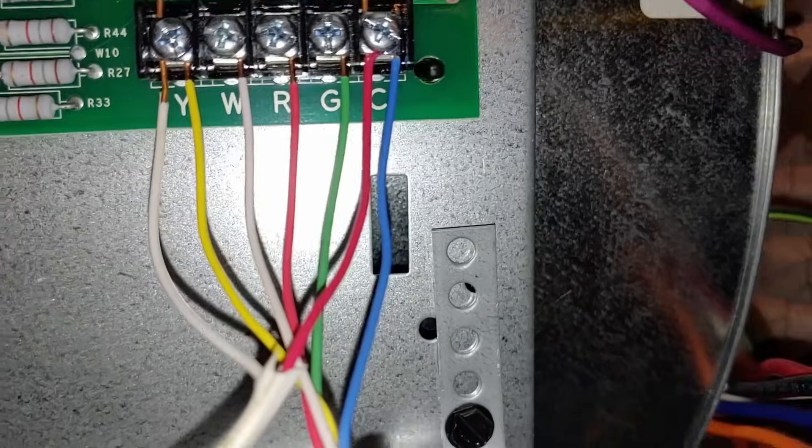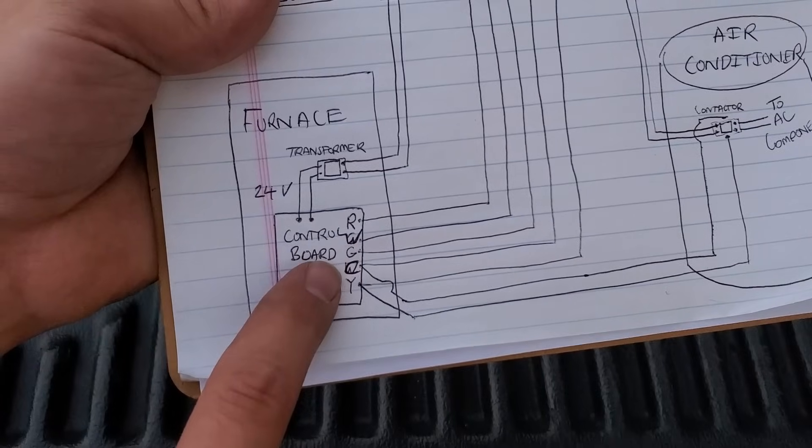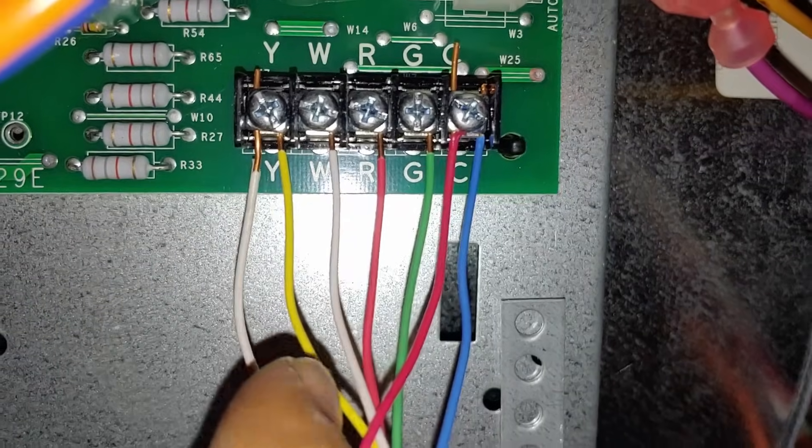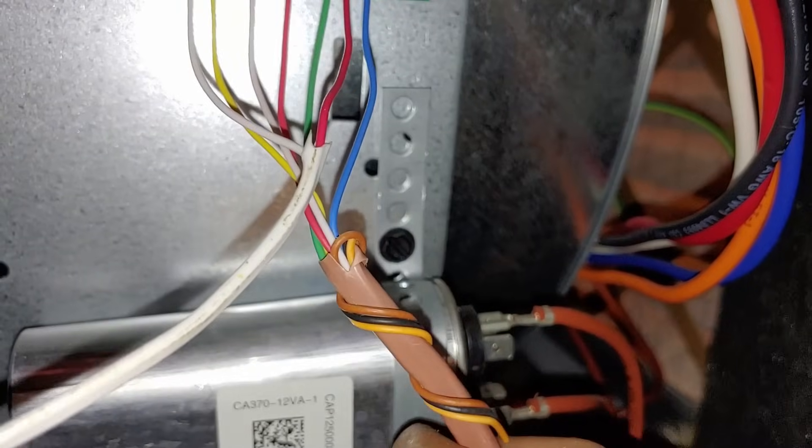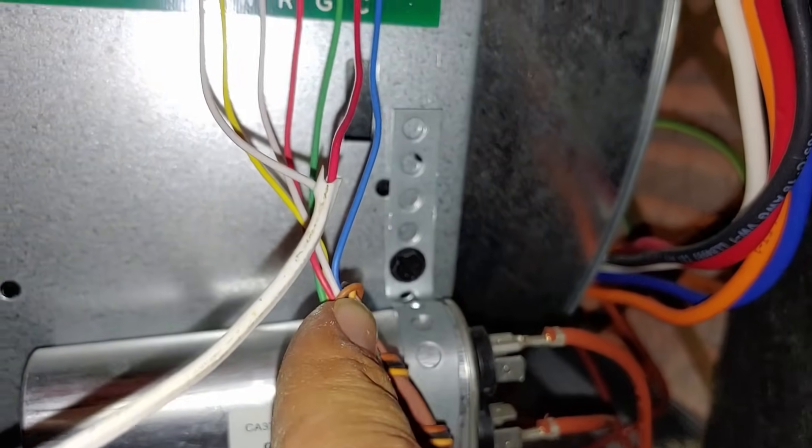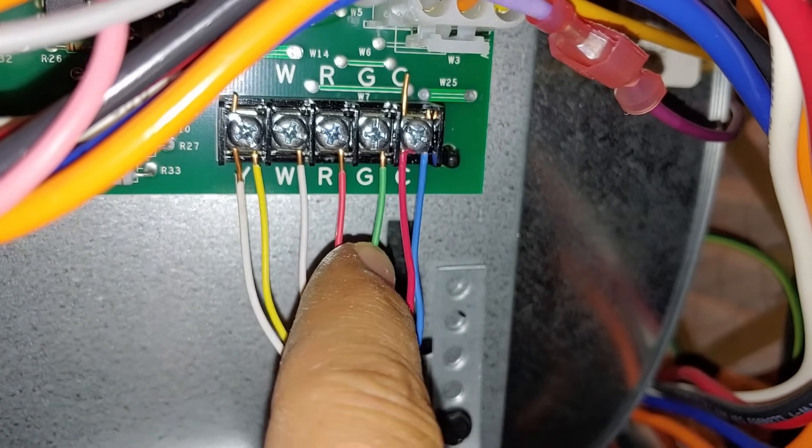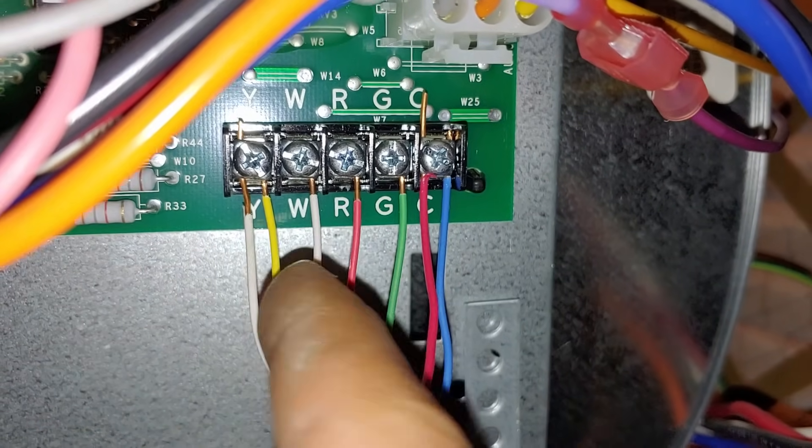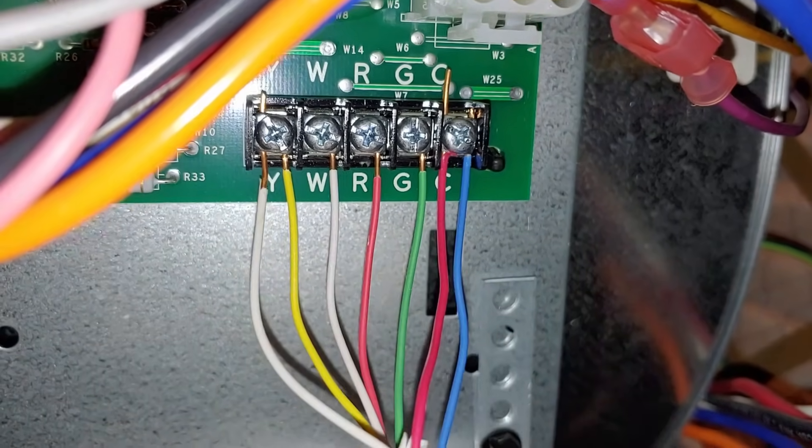The control board then has several terminals that connect to the thermostat wires. Those are typically R, W, G, C, and Y. Here are where all of our thermostat wires attach on the control board. We have our larger wire coming from the thermostat upstairs, so we have our common, our G for the fan, our R is for the 24 volts going up to the thermostat, the W is for heating, and the Y is for air conditioning.